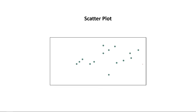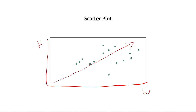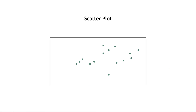The next chart on our list is a scatterplot, and this is one of my favorites. The primary purpose is to show the relationship between two variables — for example, weight and height, where generally the taller someone gets, the more they tend to weigh. This is represented mathematically with the coefficient of determination, or R squared. With a scatterplot, you could be showing positive correlation, negative correlation, or no correlation at all — which in itself can be telling. It's also good for highlighting outliers.